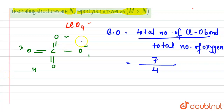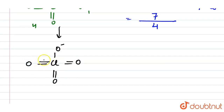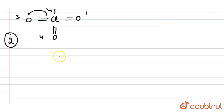Now we will draw the resonating structures. In the first resonating structure, this bond moves here and this will move here. So we have Cl double bond O, double bond O, double bond O, and O minus. This is structure one and two — the numbering helps us track what changes occur in each resonance structure.